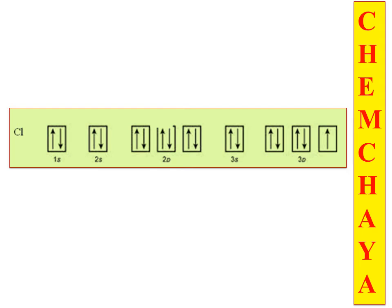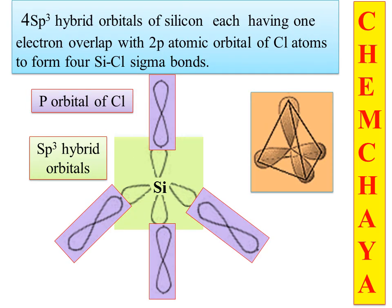Chlorine's electronic configuration is: 1s2, 2s2, 2p6, 3s2, 3p5. Chlorine has 7 valence electrons and one unpaired electron, so it needs one electron to achieve noble gas configuration. The four sp3 hybrid orbitals of silicon, each with one unpaired electron, interact with the unpaired electron of four chlorine atoms. Electron pairing occurs, resulting in sigma bond formation — sp3 hybridization of silicon and chlorine giving sigma bond formation in SiCl4.